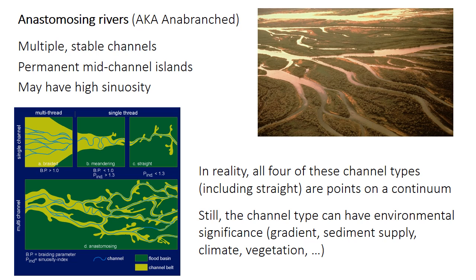Although braided and meandering rivers are the two most important types of river morphology, rivers can also be anastomosing or even have straight channels. Anastomosing rivers have multiple channels, but unlike braided rivers, those channels are fairly stable with permanent or long-lived, often vegetated islands between them. Individual channels may be highly sinuous, but don't necessarily need to be. Names like braided, meandering, or anastomosed are convenient terms, but in reality river channel morphology is a continuum and these discrete categories are just arbitrary distinctions. Nevertheless, the type of channel can still be very informative because it may be influenced by things like gradient, sediment supply, vegetation, or other factors.